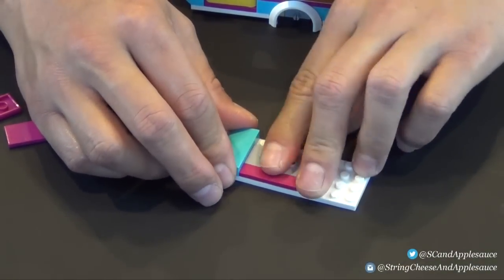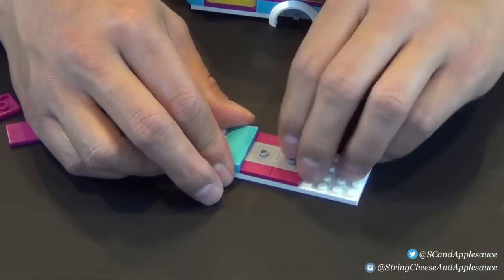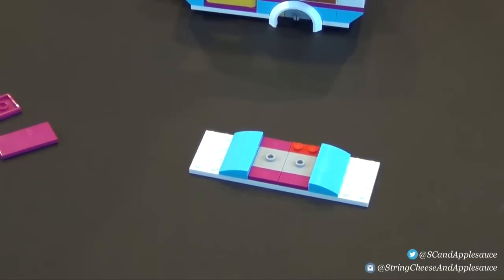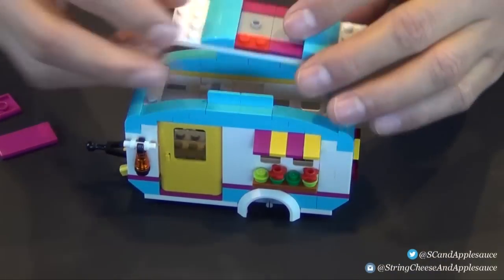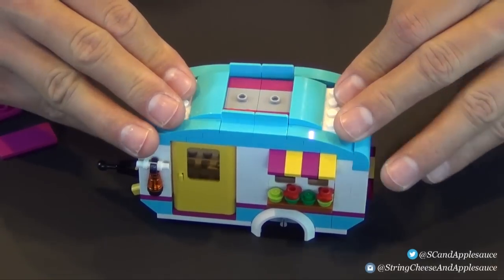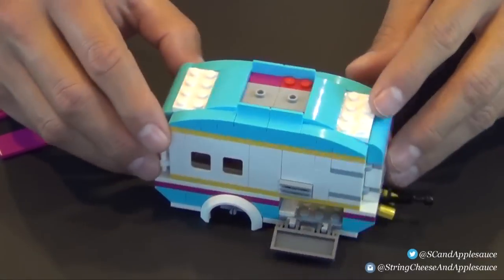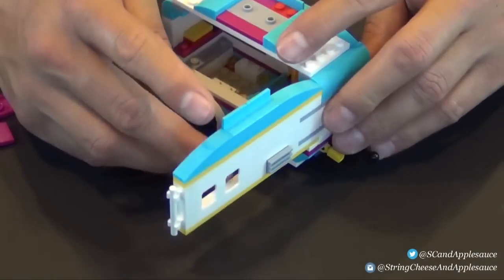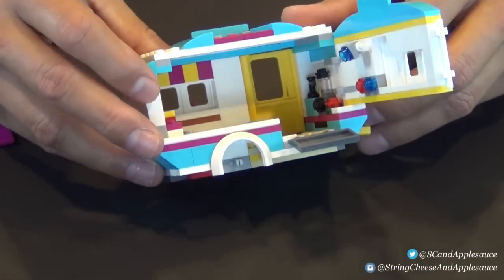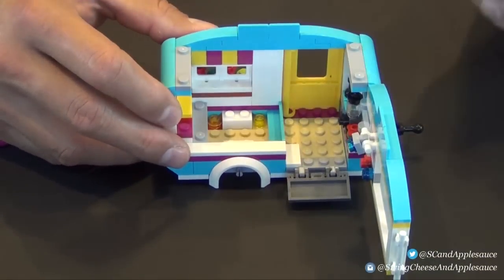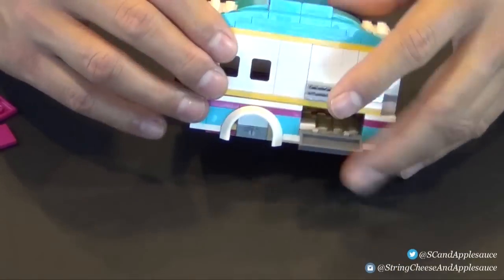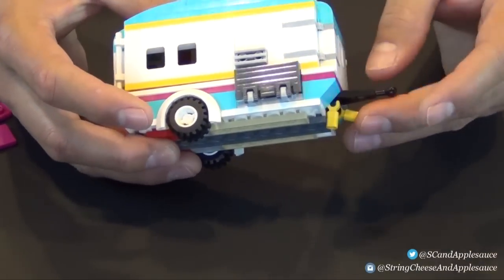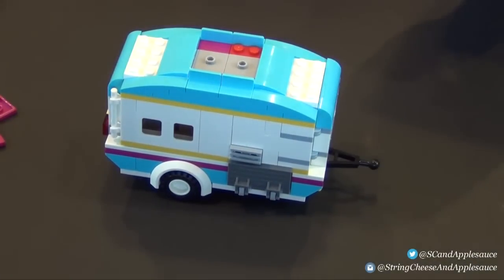Now we have another lantern, this is actually light. Put together and clip on this bar right out there. Another light. And we have two more plates. Next is a long little decorative panel that we're going to make. These sloped bricks, curved slope bricks, and some panels. This attaches all the way back here on top of that door.